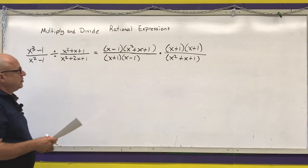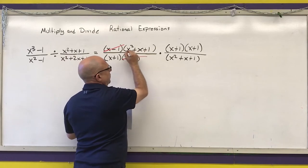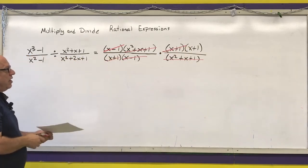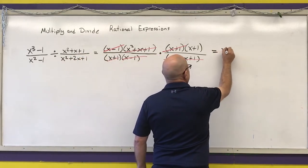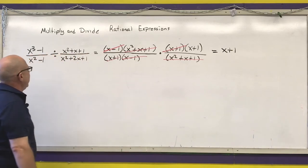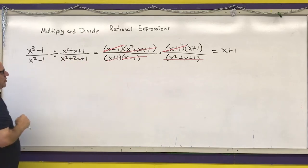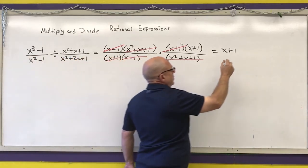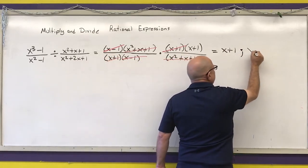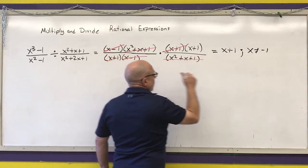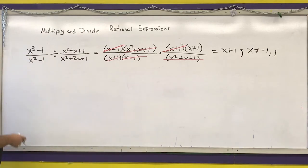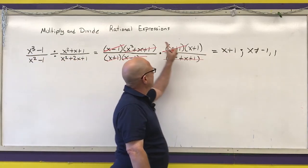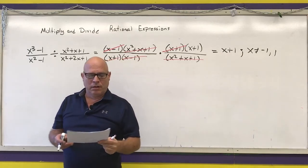Now we cancel what we can: I cancel an (x - 1), the (x² + x + 1), and one (x + 1). My final answer is (x + 1). However, I need to account for what was crossed off in the denominators. Those canceled terms make x = negative one and x = one excluded values. So my final answer is x + 1, provided x is not equal to negative one or one.